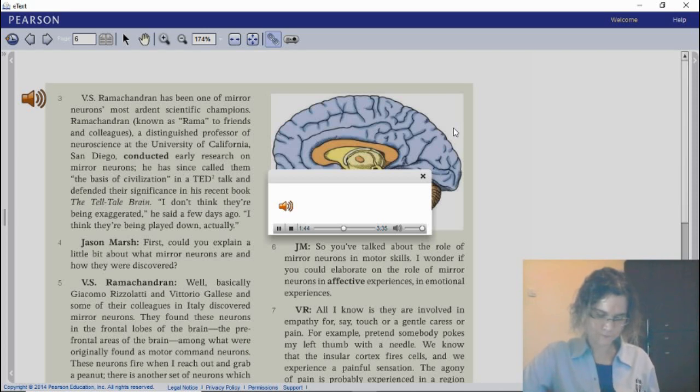These are regular motor command neurons, orchestrating a sequence of muscle twitches that allow me to reach out and grab something or do some other action. A subset of these neurons also fires when I simply watch another person—watch you reach out and do exactly the same action. So these neurons are performing a virtual reality simulation of your mind, your brain. Therefore, they're constructing a theory of your mind, of your intention, which is important for all kinds of social interaction.